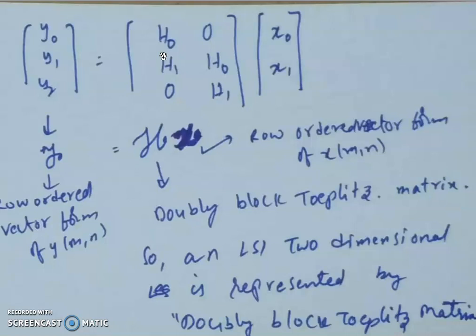As an assignment: can a one-dimensional LSI system be represented by a doubly block Toeplitz matrix? Think about it and let me know.